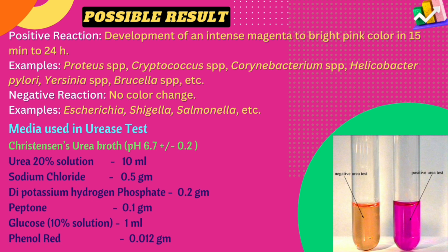The pH of Christensen's urea broth is 6.7 ± 0.2. Its composition per 100 ml of distilled water includes: urea 20% solution 10 ml, sodium chloride 0.5 g, dipotassium hydrogen phosphate 0.2 g, peptone 0.1 g, glucose 10% solution 1 ml, and phenol red 0.012 g.